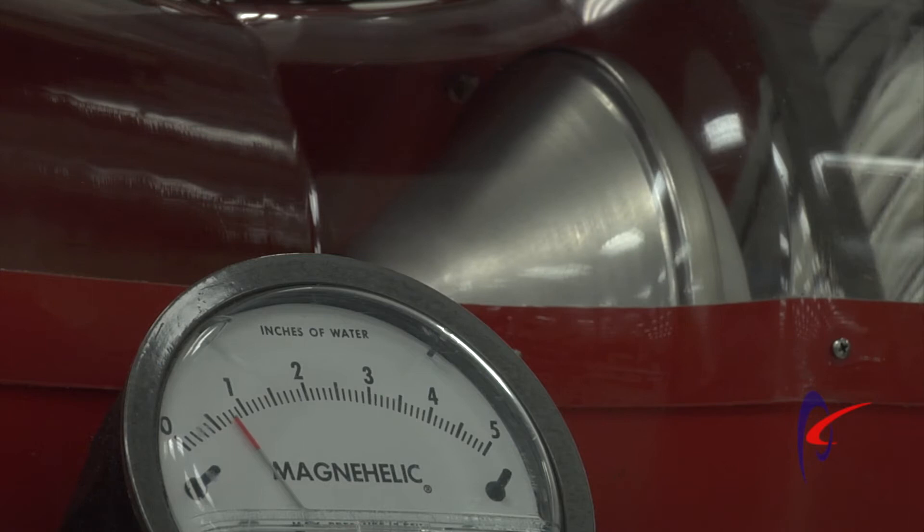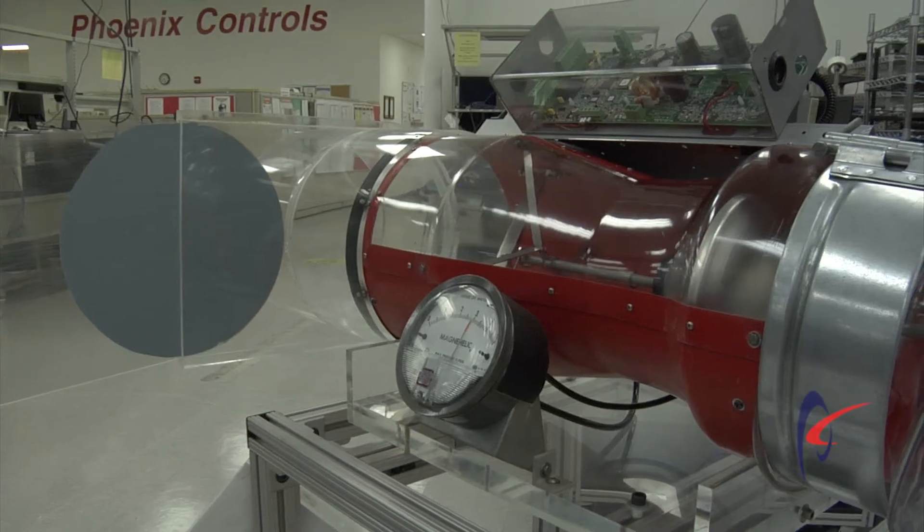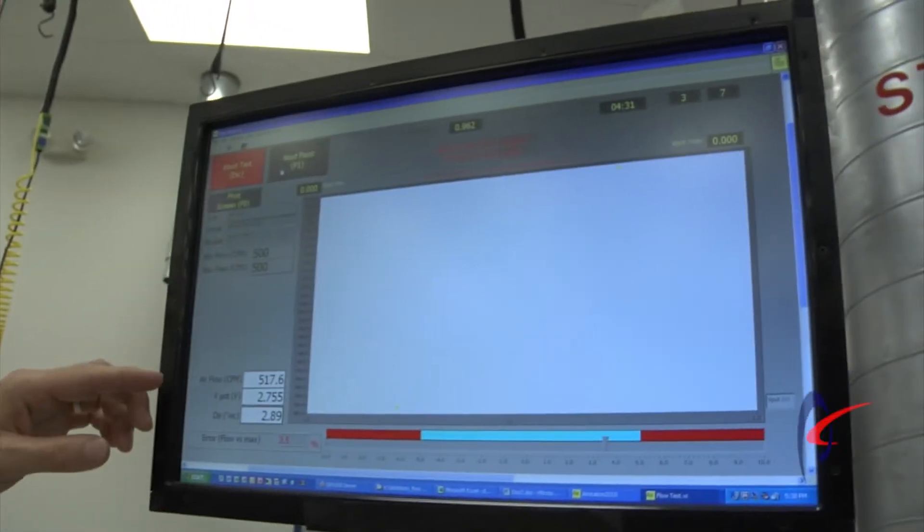We'll vary that pressure drop across the valve, showing the cone moving further inside the venturi, still maintaining constant flow through the device, plus or minus five percent. Then we'll ramp it all the way up to three inches pressure drop, our maximum on the Phoenix valve. The cone's further seated into the venturi, maintaining plus or minus five percent of the set point at all times.